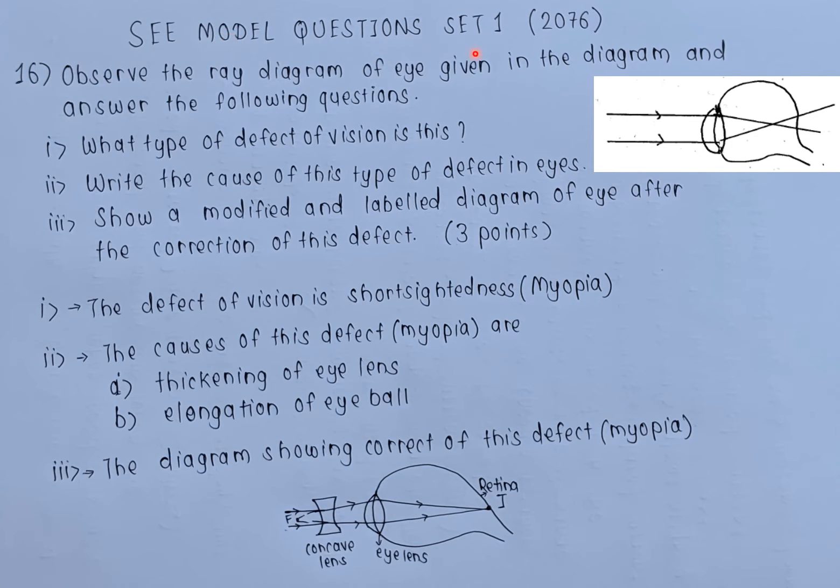Hello, SCEE model question set 1, 2016, question number 16. Observe the ray diagram of the eye given in the diagram and answer the following questions. You have three sub-questions.